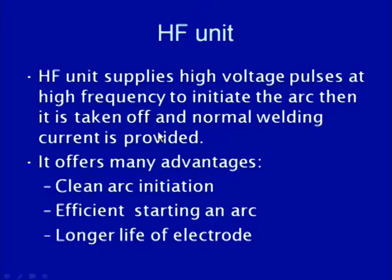Once the arc is initiated, the high frequency unit pulses are removed from the welding circuit. The high frequency unit is used only for arc initiation. Once the arc is initiated, normal welding current supply is provided for establishing the welding arc, which generates the heat required for melting the faying surfaces. This method offers many advantages because there is no contact between the electrode and the carbon block or the workpiece, making it a very clean and efficient method with longer electrode life.